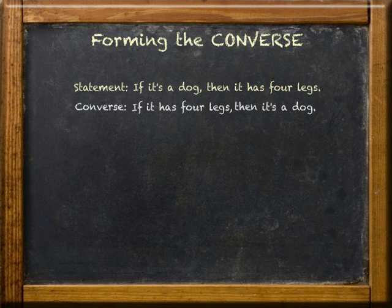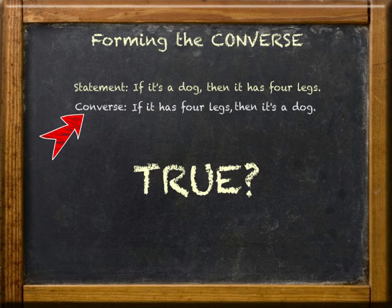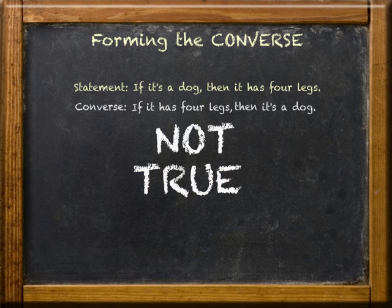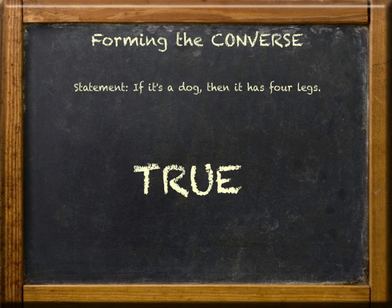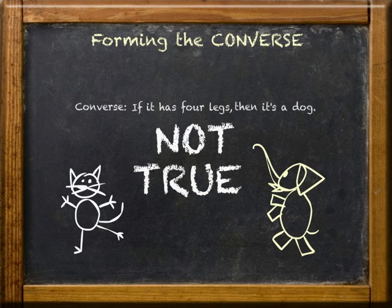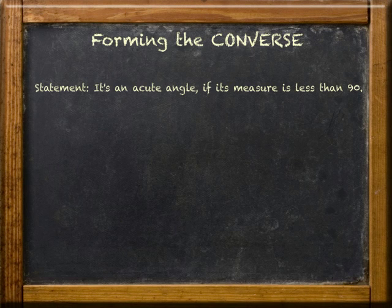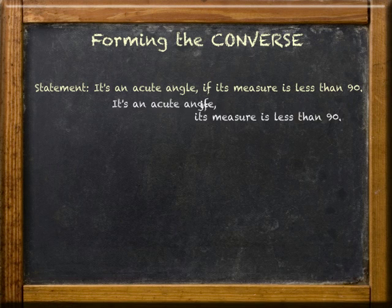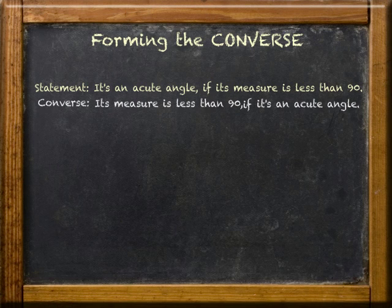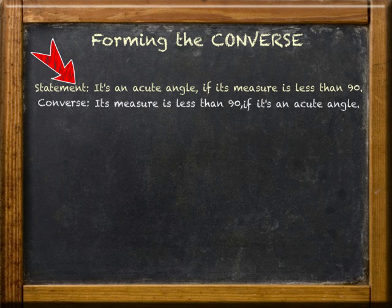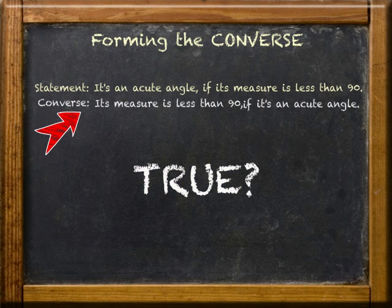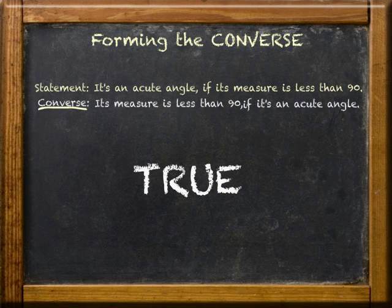And check this out. While the original statement is true, think about the truth of the converse. With this one, the converse is not true — could have been a cat or an elephant. The statement was true and the converse was not true. Let's try another one. Once again, we formed the converse by switching the hypothesis and conclusion. The original statement? Definitely true. How about that converse? That one is true as well. An important point: for some conditional statements the converse is true, and for others the converse is not true. That's very important.